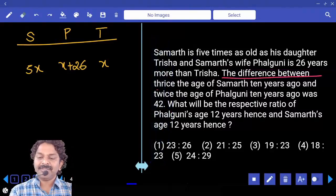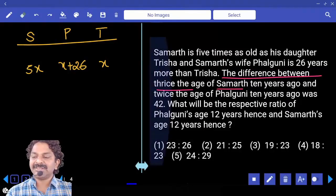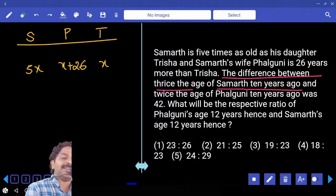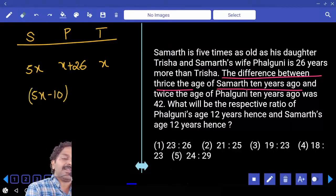The difference between thrice of Samarth's age 10 years ago - present age of Samarth is 5X, 10 years back minus 10. And how many times? 3 times.